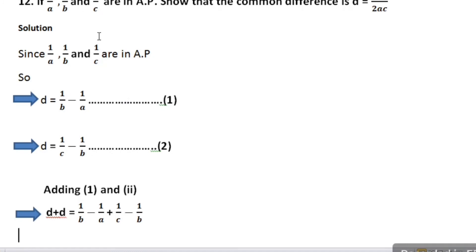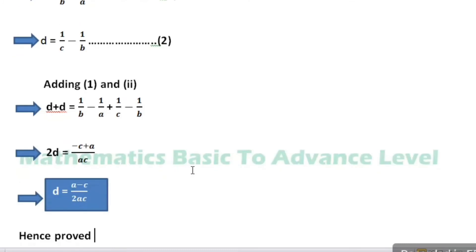Next, d is the difference between 1 divided by c and 1 divided by b. So 1 divided by c minus 1 divided by b. That is equation number 2.